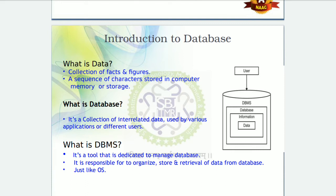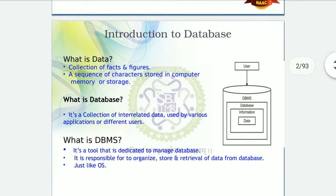What is the difference between data and information? Data is simply a raw material and information is a product. When you process data in an appropriate manner it becomes information. For example, suppose I tell you 'Ashwin Kanitkar, Tata McGraw-Hill, and 500' — you may not understand. Few students might recognize that Ashwin Kanitkar is an author, TMH is the publication, and 500 may be a page number.